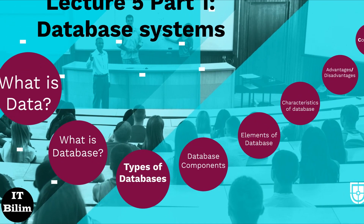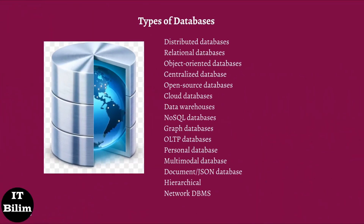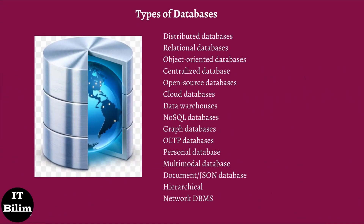Types of databases. Here are some popular types of databases. Distributed databases: A distributed database is a type of database that has contributions from the common database and information captured by local computers. In this type of database system, the data is not in one place and is distributed at various organizations.